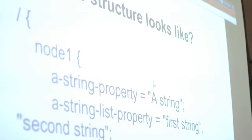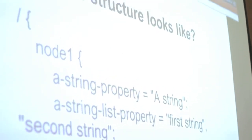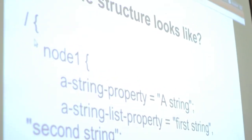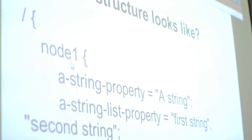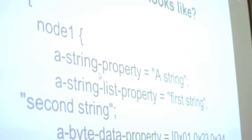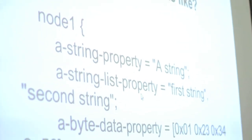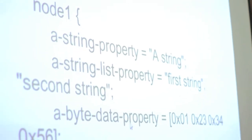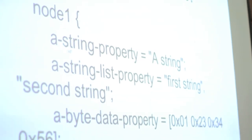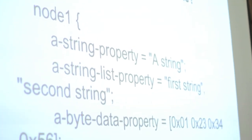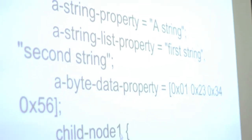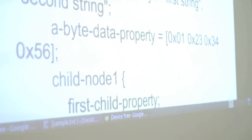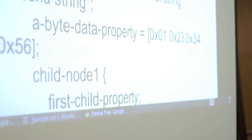Here is an example structure of a device tree. There is a root node — only one. Then there is node 1, which has some properties below, for example a string or a list property to describe something. From every node you can also add child nodes.